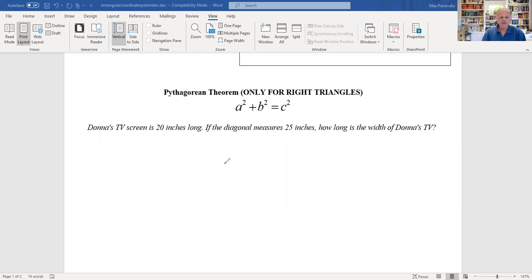Donna's TV screen is 20 inches long, and if the diagonal measures 25 inches, then how long is the width? So we're just going to draw us a little diagram here. Here's the TV screen. And we've got the length is 20 inches, and then the diagonal, which is going like this, is 25 inches. And usually when you buy a TV, they only give you what the diagonal is. So if you bought a 32 inch TV, you're really buying one as a 32 inch diagonal screen.